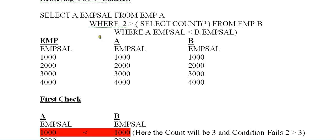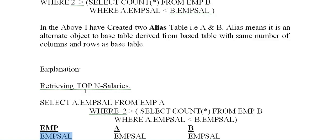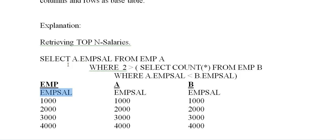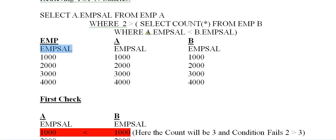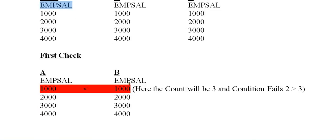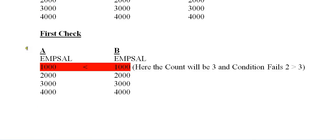EMP is the original base table and A and B are alias tables. EMP has one field — EMP_salary — with four records, and we need to retrieve the second max salary. The outer query runs first: SELECT a.EMP_salary FROM EMP a. Then it evaluates the condition using the inner query: SELECT COUNT(*) FROM EMP b WHERE a.EMP_salary < b.EMP_salary.